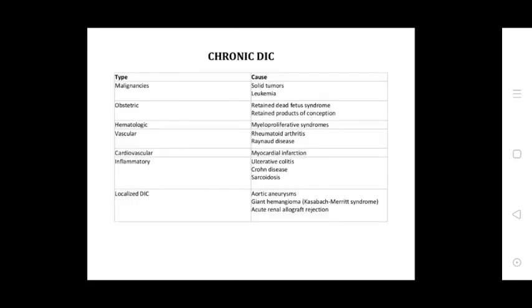Chronic DIC causes include meningitis, solid tumors, leukemia, obstetric conditions like retained dead fetus syndrome and retained products of conception. Hematological causes include myeloproliferative syndrome. Vascular causes include rheumatoid arthritis. Cardiovascular causes include myocardial infarction and inflammatory conditions. Other causes include Crohn disease and sarcoid disease.